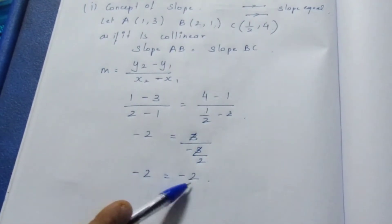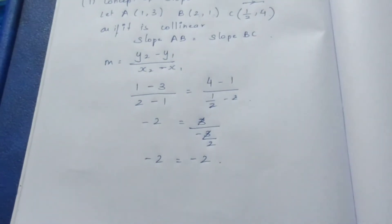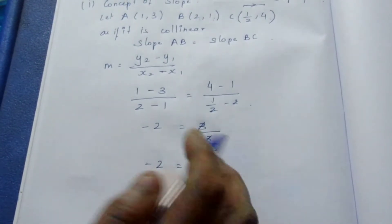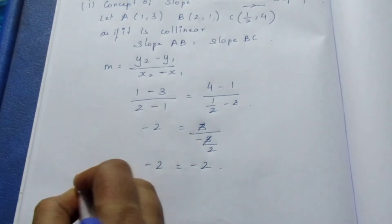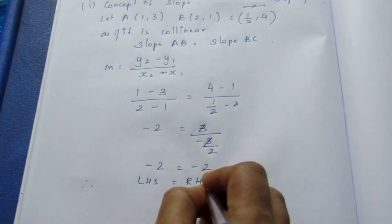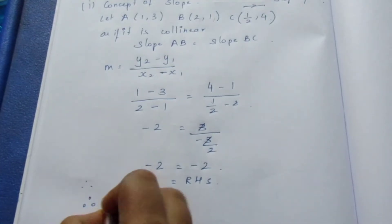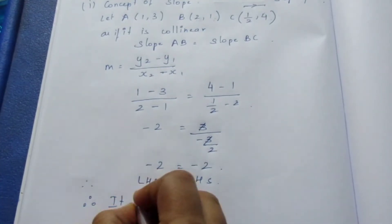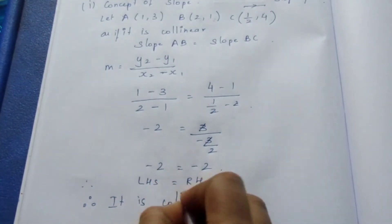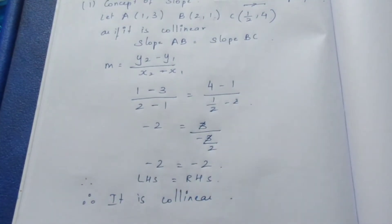Since both slopes equal −2, they are equal. Therefore, the points are collinear. This completes the slope method. Now we move to the second concept — using a straight line equation.